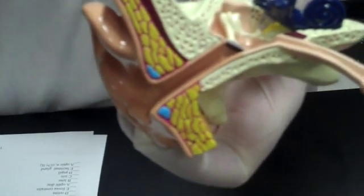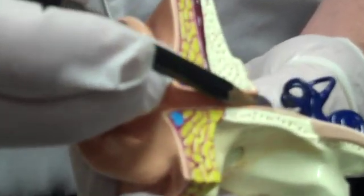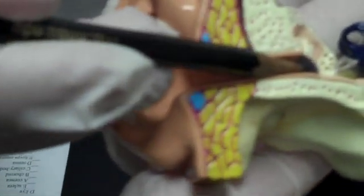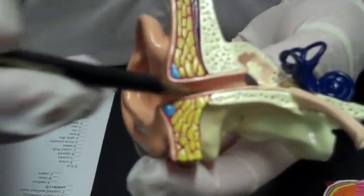Then we have the tympanic membrane. It's this little gray thing here. When they're looking at ears to determine if you have an ear infection, they're looking in there to see if it's red, inflamed, bulging. Then we have the external auditory canal.